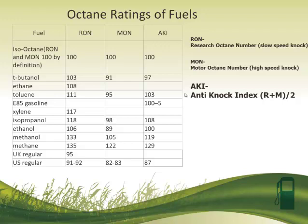U.S. regular gasoline is 87 octane and most vehicles require a minimum of 87 octane to run properly. Some high performance vehicles are going to require higher octane fuels such as 91. The octane number is only giving you information about the fuel's ability to compress without igniting. A higher octane fuel does not necessarily have more energy. The reason we sometimes perceive that is that a high performance vehicle has higher compression — it compresses the fuel more in the cylinder — and because of that, it requires a higher octane fuel to withstand that compression. Higher compression yields greater efficiency in an engine and thus potentially more power, which is why we sometimes perceive higher octane fuels as having higher power or energy. But the octane rating does not give us that information.